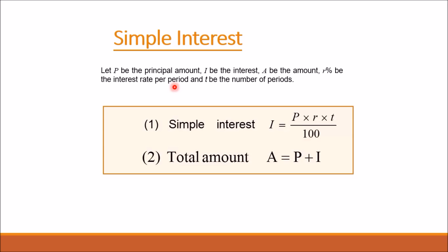This period will be mentioned in the question, and T is the number of time periods. Simple interest can be found with the formula: I equals P times R times T divided by 100. After finding the interest amount, we can find the total amount: A equals principal amount plus interest amount.